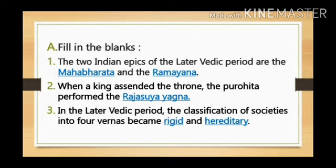Question number 3: In the later Vedic period, the classification of societies into four Varnas became dash and dash. Your answer is Rigid and Hereditary, which means the Varnas — which later came to be known as caste — was now decided by birth and not by occupation.